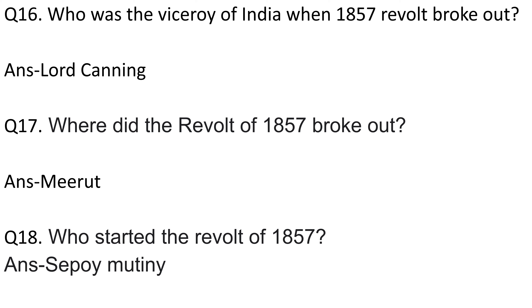Question number 16: Who was the viceroy of India when the 1857 revolt broke out? Answer is Lord Canning. Question number 17: Where did the revolt of 1857 break out? Answer is Meerut. Question number 18: Who started the revolt of 1857? Answer is the Sepoy Mutiny.